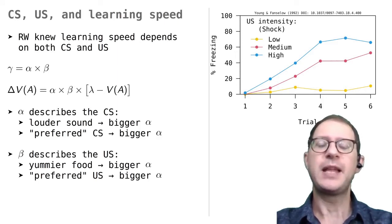For example, a dog would learn to salivate more quickly to a nice juicy steak than to some other food it doesn't like that much.